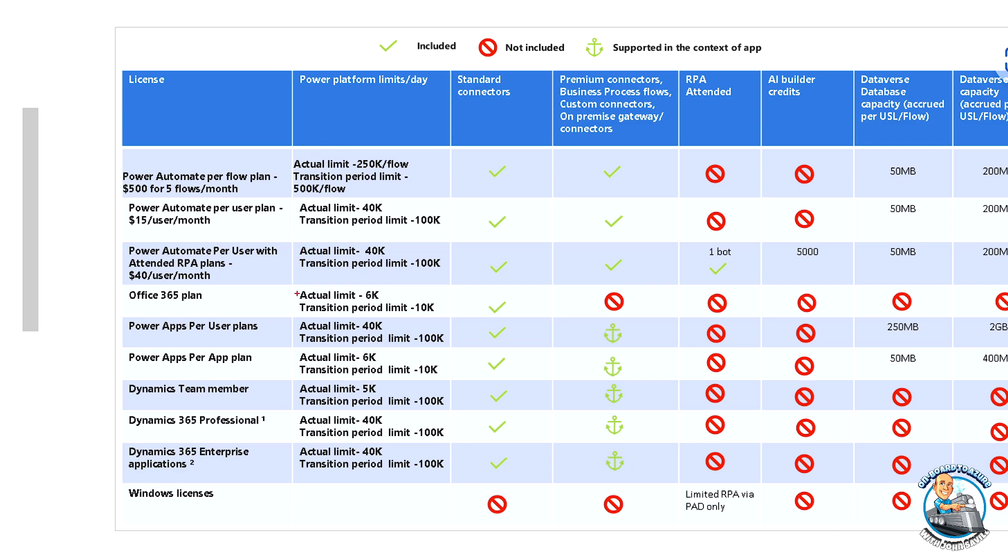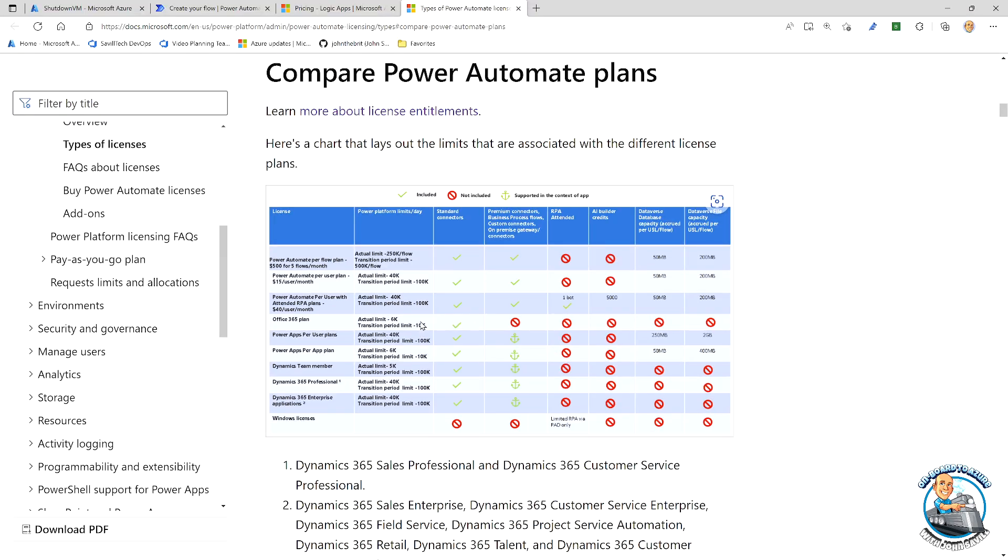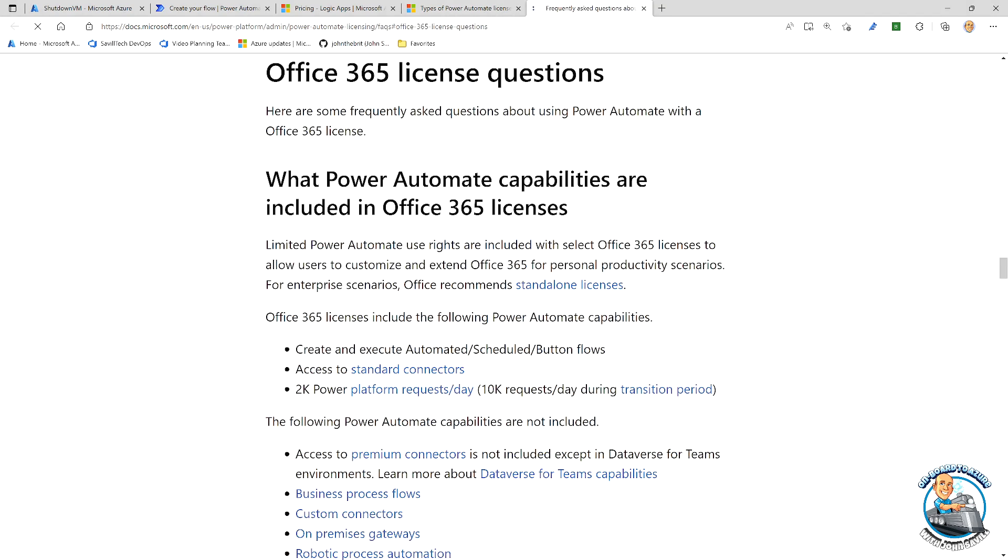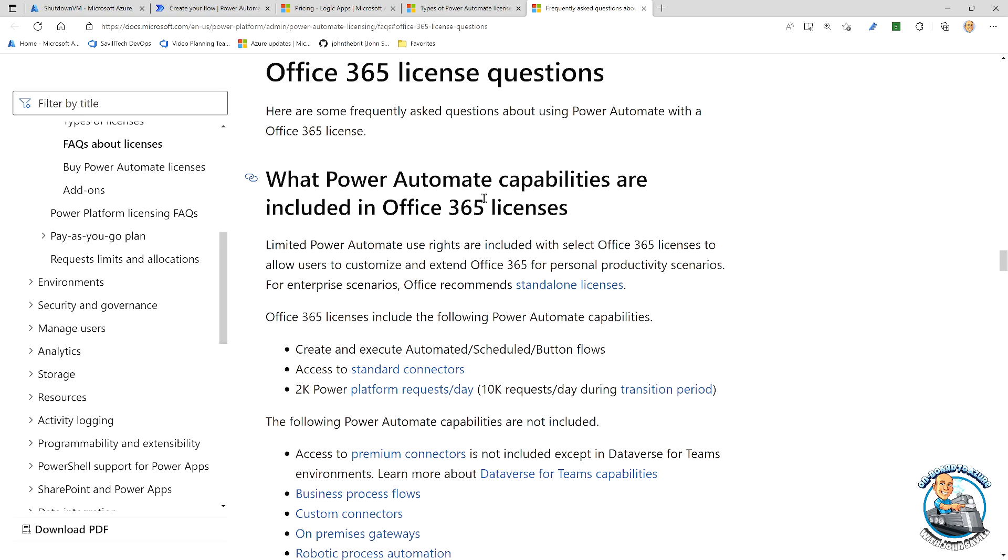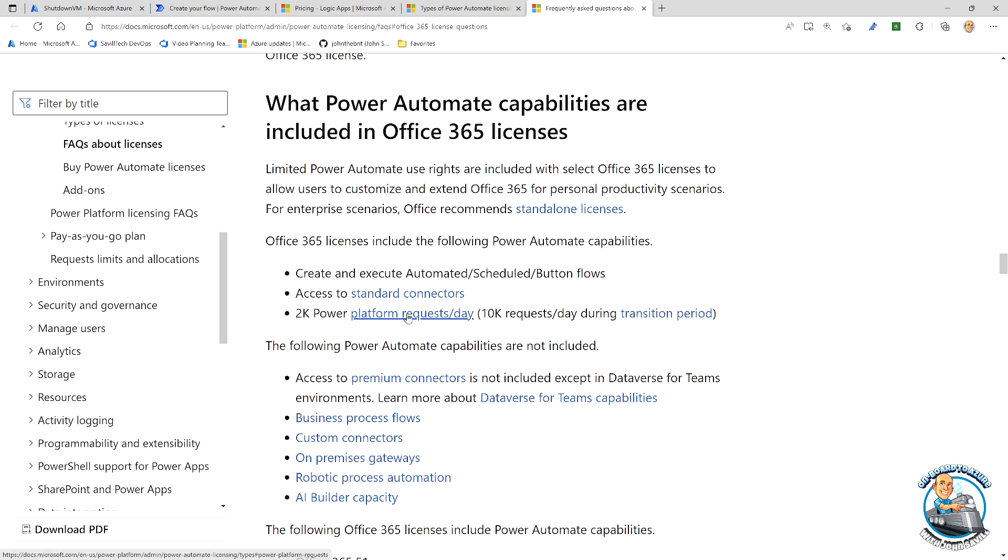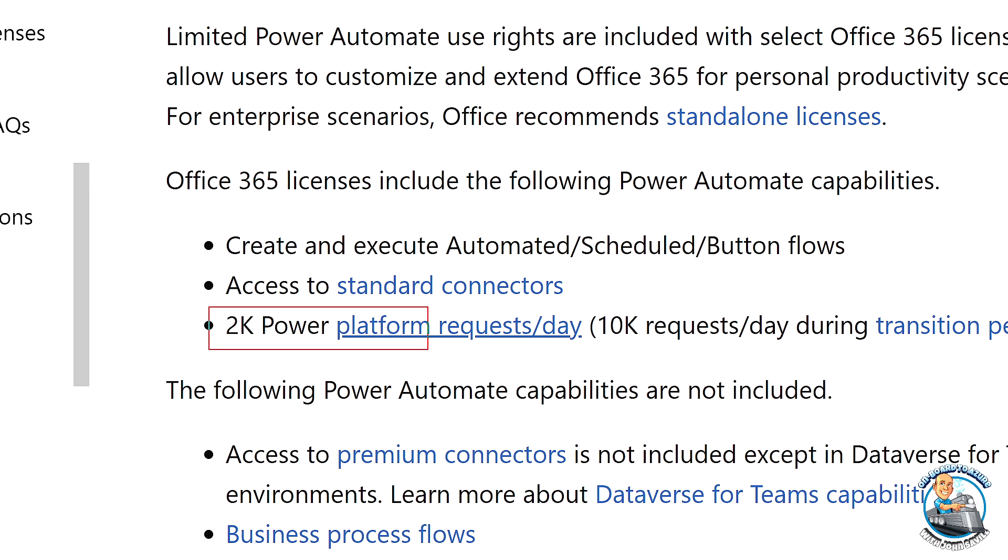And it has a nice chart here that basically explains, well, depending on which license you have, that will say what you have access to. And there are limits. So we can see here there are limits around what I can actually do in terms of the amount of work it's performing. How many actions a day can I do, for example? So if I was to jump over to this other document, this goes into detail. Hey, I own Office 365.